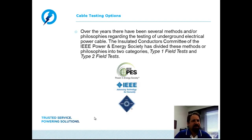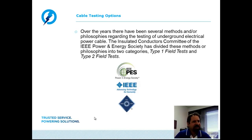Over the years, there have been several methods and philosophies regarding the testing of underground electric power cables in the field. The Insulated Conductor Committee of the IEEE Power and Energy Society has divided these into two fundamental categories: the Type 1 field test and the Type 2 field test. A Type 1 test is intended to detect defects in the insulation of the cable system to improve service reliability after the defective part is removed and appropriate repairs are performed. These tests are usually achieved by application of moderately increased voltage across the insulation for a prescribed duration, and are categorized as pass or fail.